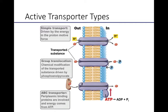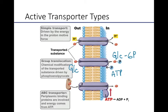The third type of active transport is group translocation, where a molecule moves from low to high concentration and is then trapped inside the cell by chemically modifying it. A great example is the glucose transporter, which moves glucose from outside to inside the cell — essentially the first step of glycolysis. As glucose moves from low to high concentration, it is modified by the enzyme hexokinase, which transfers a phosphate from ATP onto glucose to form glucose-6-phosphate. Glucose-6-phosphate, now modified, cannot be recognized or transported back out by the glucose transporter, so it is effectively locked inside the cell.